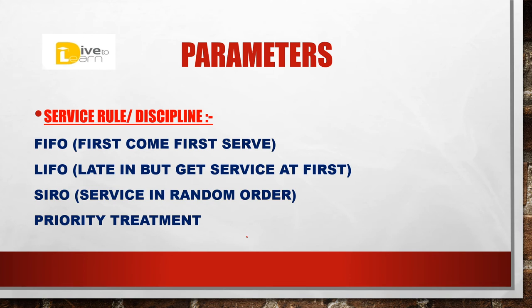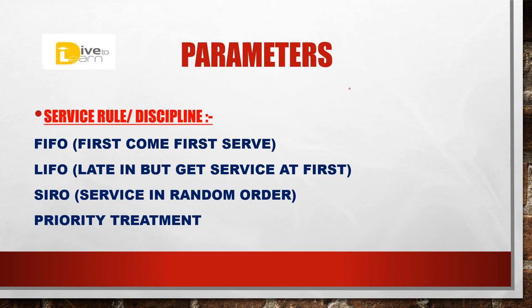[Hindi/Urdu] This is not a first come first served approach, nor a last come first approach. In this method, service is given randomly — that depends on the service provider. The service provider will randomly select whom to serve; there is no fixed route or factor. The next rule is priority treatment — some customers get special treatment based on priority. For example, if a VIP like a prime minister comes to the bank, they will not be made to stand in the line. They get service on a priority basis due to designation, emergency, or any other reason. This is called priority treatment — not FIFO, LIFO, or random, but directly treated first.